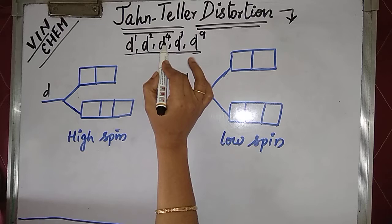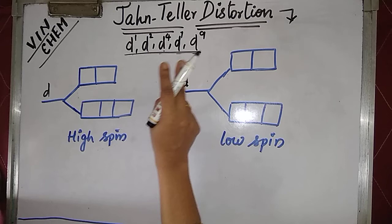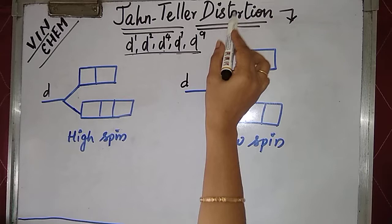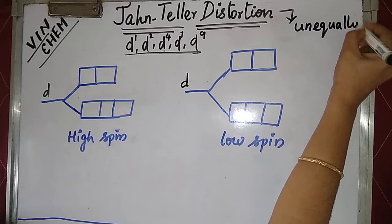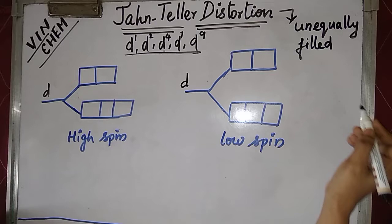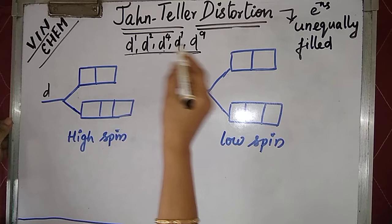Irrespective of high spin or low spin, we have a distortion in d1, d2, d4, d7, and d9 orbitals. Other than these five, two more d orbitals also show Jahn-Teller distortion. What is Jahn-Teller distortion and when will it occur? It will occur when the electrons in the d orbitals are unequally filled — unsymmetrically filled. If the electrons are unequally filled, then we say this is Jahn-Teller distortion.